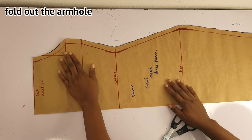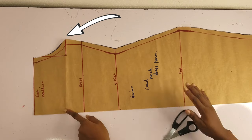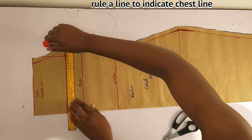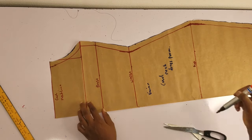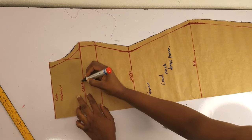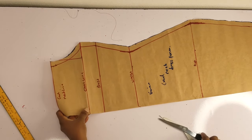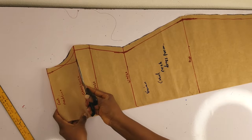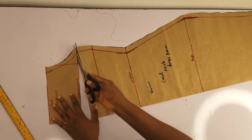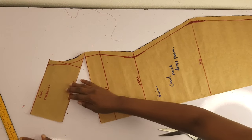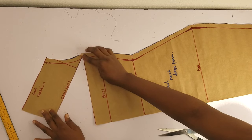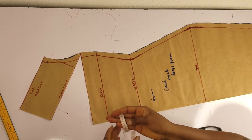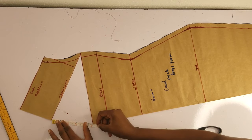For the front, remember to fold out the armhole. I'll rule a line to indicate the chest line because that is where I'll be slashing this pattern from. I'll cut this out using my scissors — I'll make sure not to cut all the way through the pattern, leaving a little bit so I can open it. How deep I want my cowl neck to be — I want it to be five inches deep. The more you open it the deeper the cowl neck becomes.